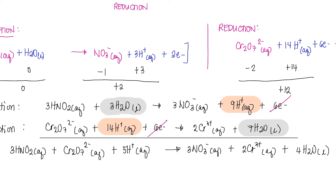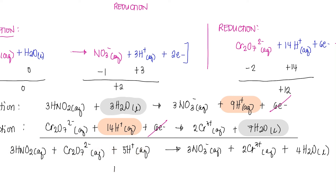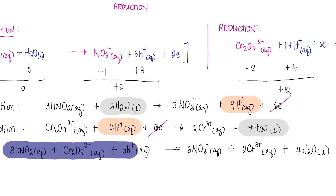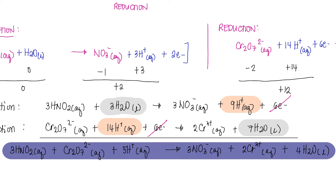We also check the charges. On the reactant side: positive five minus two plus zero gives a total of positive three. On the product side: negative three plus six plus zero also gives positive three. The charges are equal. Since both the atom counts and charges are equal on both sides, this is the correctly balanced net ionic equation using the half-reaction method.